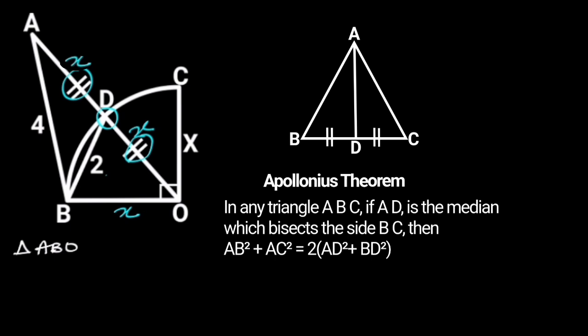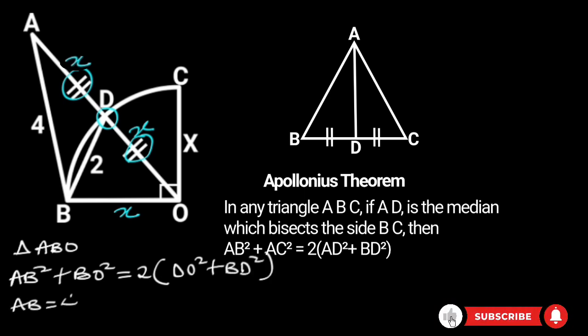From this theorem, it follows that in triangle ABO, AB squared plus BO squared is equal to 2 times DO squared plus BD squared. AB is equal to 4, BO is equal to X, DO is equal to X, and BD is equal to 2.